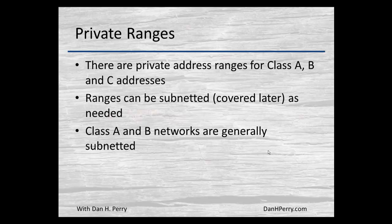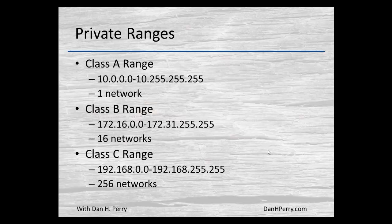There are three private addressing ranges: class A, B, and C. Those ranges can be subnetted — we'll cover subnetting later. We can take that large class A network and divide it into smaller networks. Class A and B networks are usually subnetted. Class C networks are not, with maybe the exception of lab environments and for learning subnetting, where it's often easier to learn on a class C.